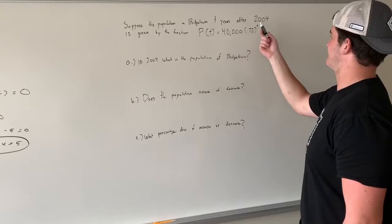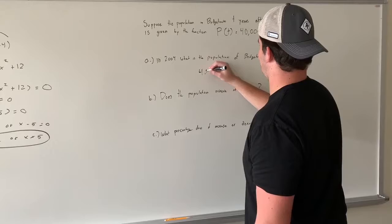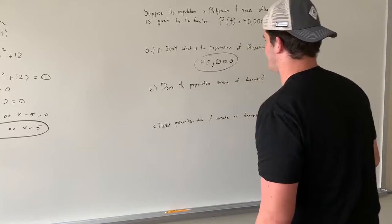So, it's kind of already giving it to us, because the initial population, or the initial amount is 40,000. So it's pretty simple, it's actually just going to be 40,000. That's going to be your answer right there.